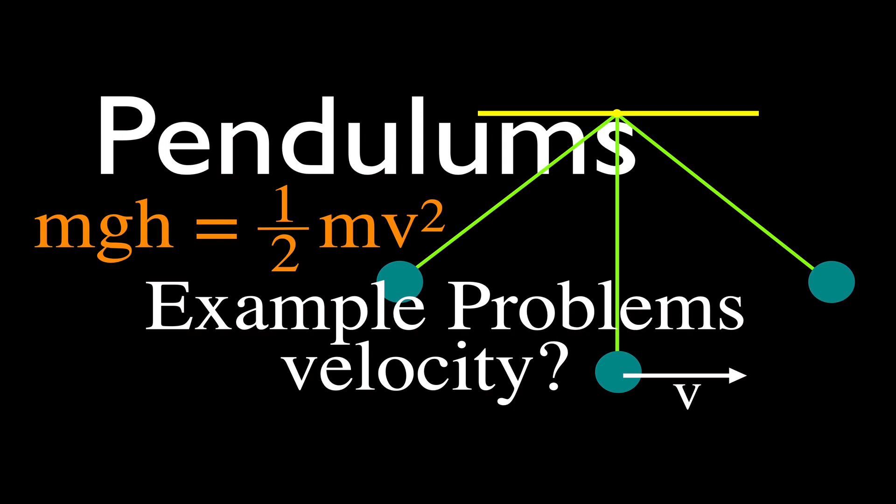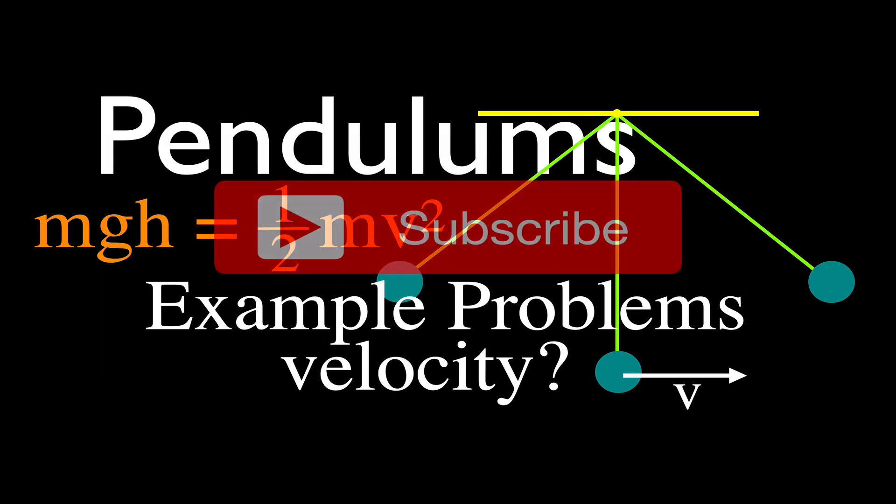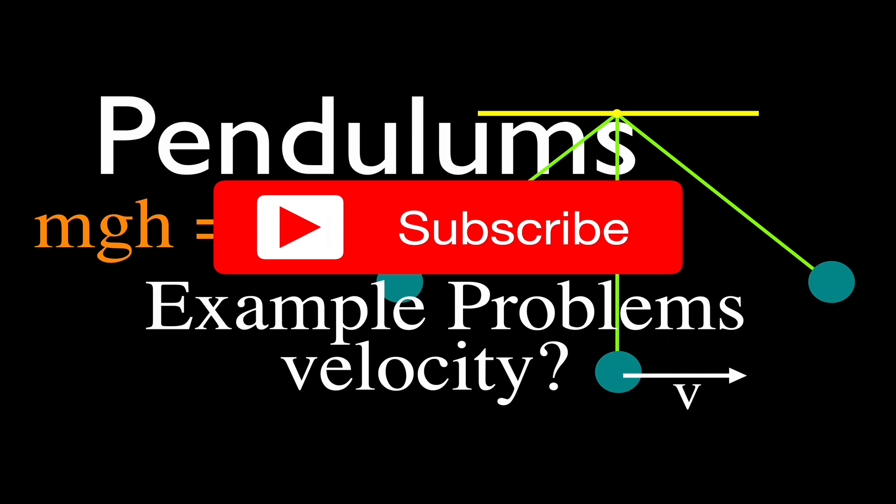For today's video, I'm going to go over five different example problems for pendulums. We're going to be using the conservation of energy, kinetic and potential energy to solve these problems. Please don't forget to subscribe to my channel and get all my excellent physics, chemistry, and math videos. That's Step-by-Step Science.